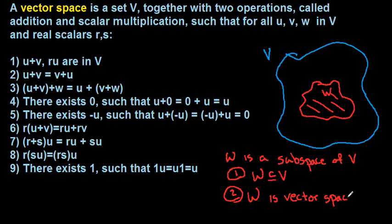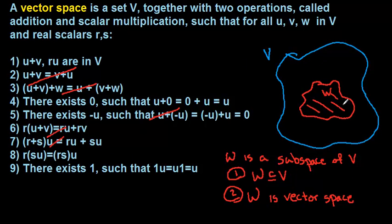You might think checking this is tedious since there are nine properties to verify for a vector space. But if W is a subset of V, we don't need to check things like commutativity of addition, because if everyone in V is commutative, certainly everyone in W is too. The same holds for associativity, additive inverses, and distributive properties. So our test for a subspace boils down to just two items: we need to check closure under addition and closure under scalar multiplication.